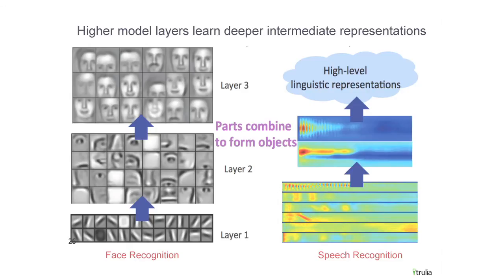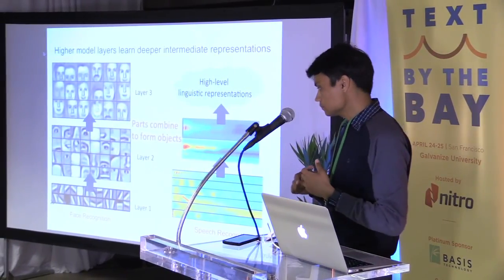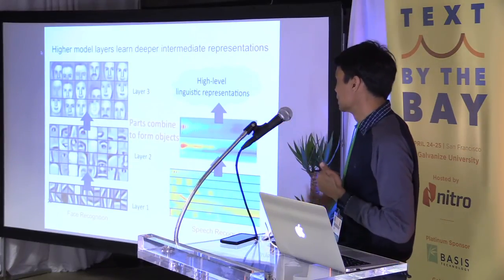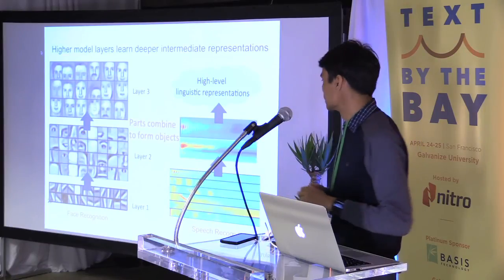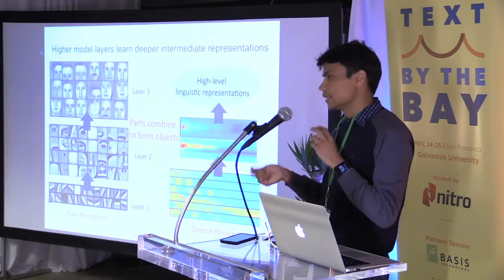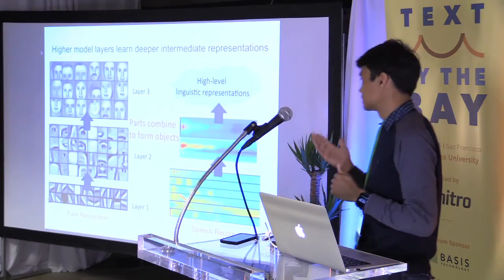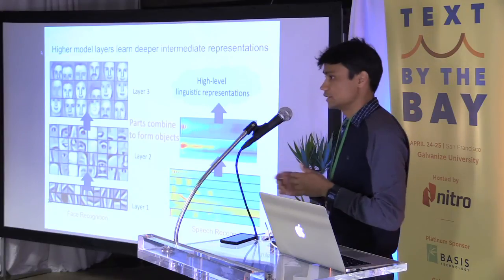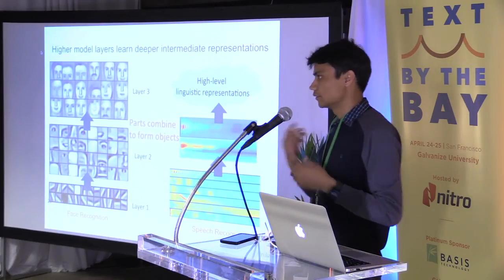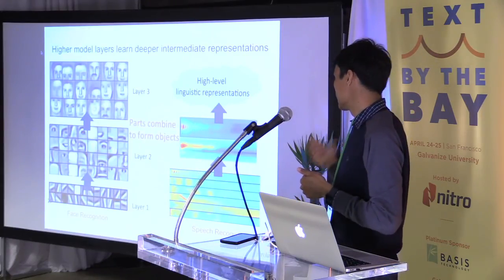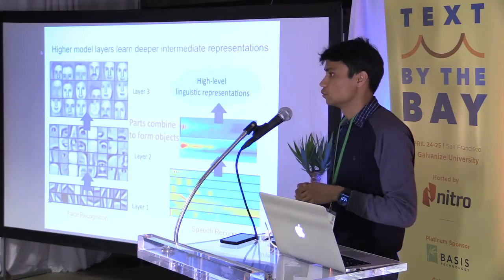What do we mean by high-level intermediate representations? For example in face recognition, you take the raw pixels and sort of learn higher levels: layer one is basically Gabor filters, edges and corners; the second layer is a combination of these — combining multiple layers you can create face parts, and combining those you reconstruct a face. These are the high-level abstractions that deep learning is able to learn. Similarly for speech recognition, which is one of the areas where deep learning first performed really well — the idea is to take the raw speech signal and identify latent representations that do very well at phoneme classification.